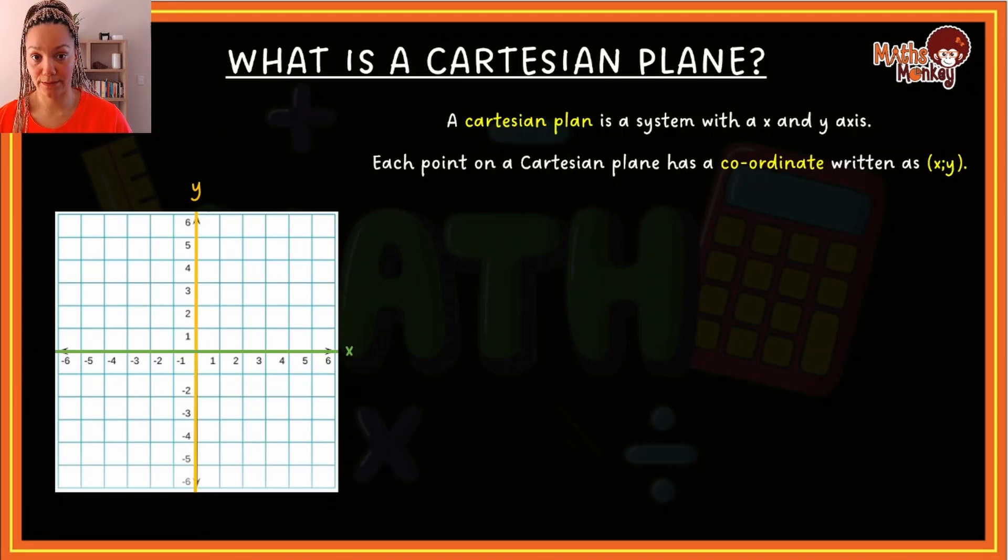Now, each point on a Cartesian plane, no matter where you put the point, will have what is called a coordinate. And a coordinate is written as (x, y). Now, the coordinate is there just to represent where this point is. So that no matter where you are, no matter what, if you tell someone this is the coordinate, everyone will be able to go to the exact same point. So each point on the Cartesian plane will have a coordinate, and that coordinate is written as (x, y) in a bracket.